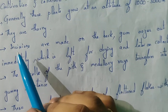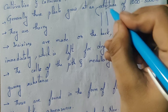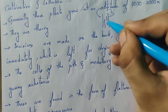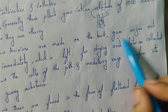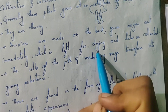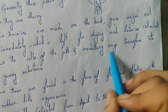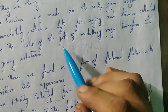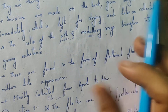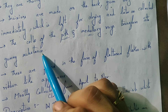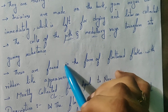Incisions means cuts. Incisions are made on the bark of the plant. The gummy substance comes out of the plant — gum oozes out immediately, which is left for drying and later on collected. The cells of the pith and medullary rays transform into gummy substances inside the plant. These two combined convert into gummy substances.